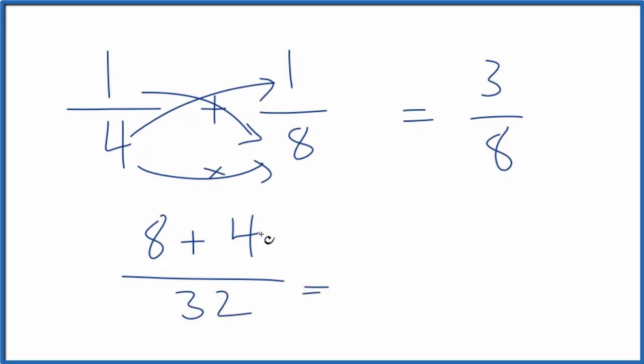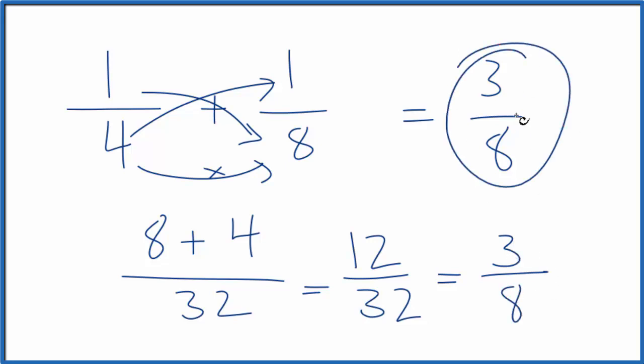At this point, we would have 8 plus 4 is 12 over 32. And we could simplify this. We know 4 goes into 12 3 times. And 4 times 8 is 32. So 4 goes into 32 8 times. We end up with 3 eighths. That's what we got before. So we know we did this first part correctly.